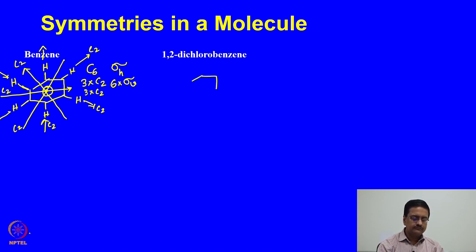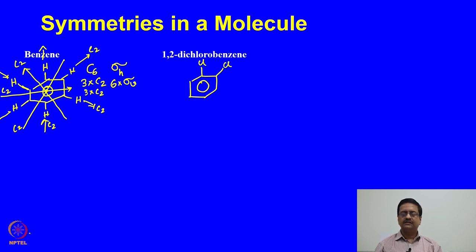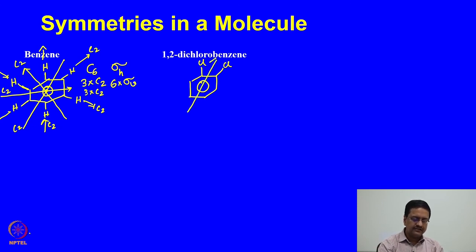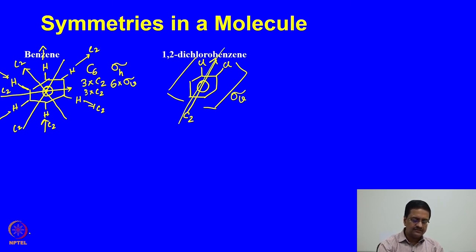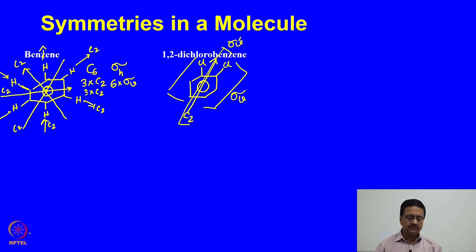The next molecule is 1,2-dichlorobenzene. By adding two chlorine atoms in adjacent positions, we have lost the C6 symmetry. What we have is just one C2 axis bisecting the molecule. The plane of the molecule is sigma v, and the plane which contains the C2 axis and is perpendicular to the molecular plane is another sigma v. So this molecule is very similar in symmetry to water.